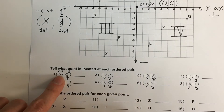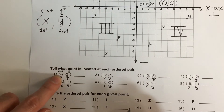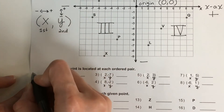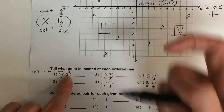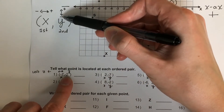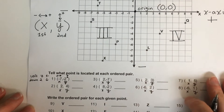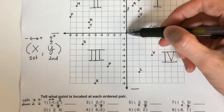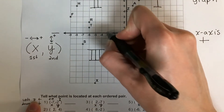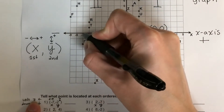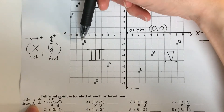Negative seven — negative is left. So I need to go to the left seven. And this is negative two. Negative is down, so that means down two. What you're going to do is start in the middle. Always start here. Left seven: one, two, three, four, five, six, seven. Then down two: one, two. There it is.